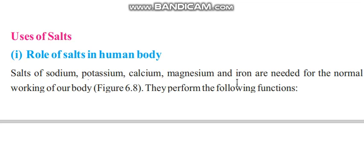When someone is weak in the blood, they will have a deficiency of iron. Or when someone is weak, they will have a deficiency of calcium. When our muscles are weak, we are going to see medicines where potassium and sodium are present.